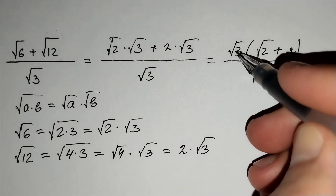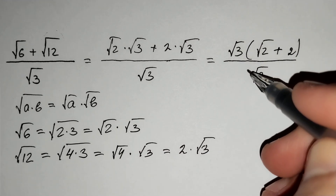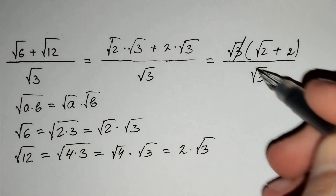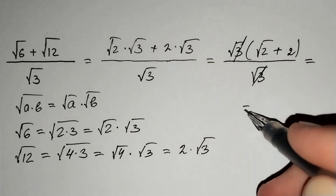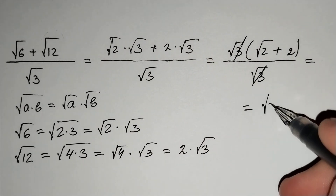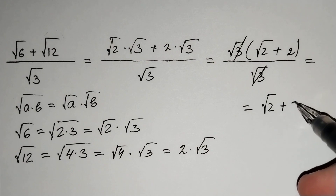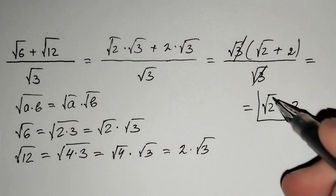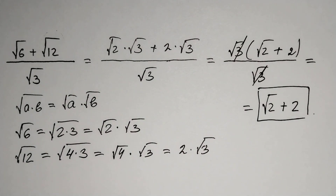And since the square root of 3 appears in both numerator and denominator, we may cancel it, and the square root of 2 plus 2 remains. This is our answer.